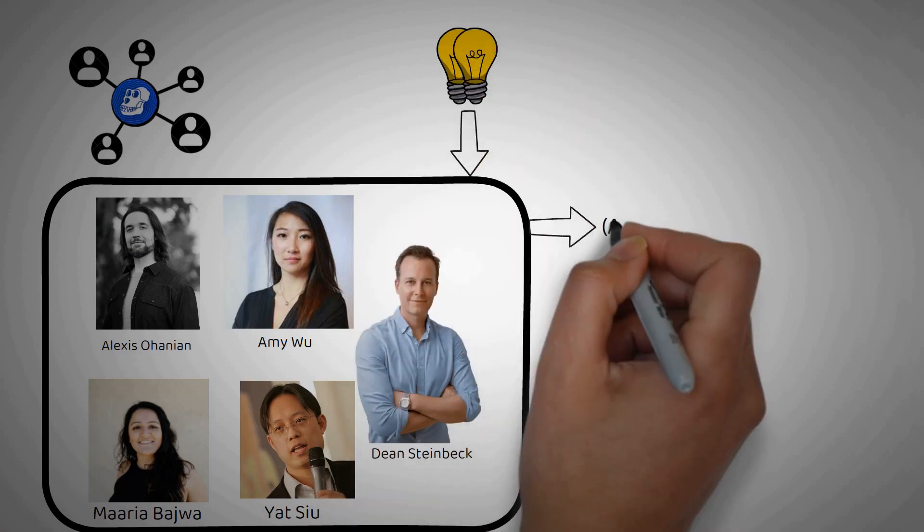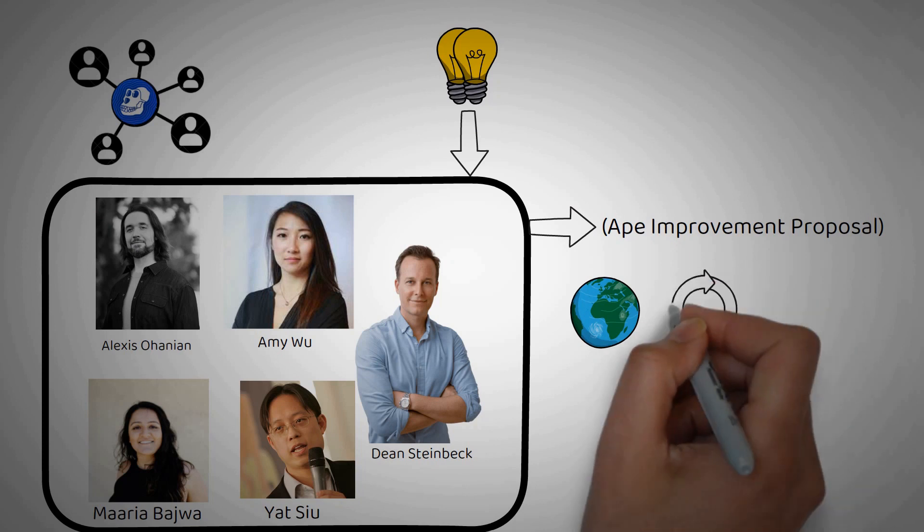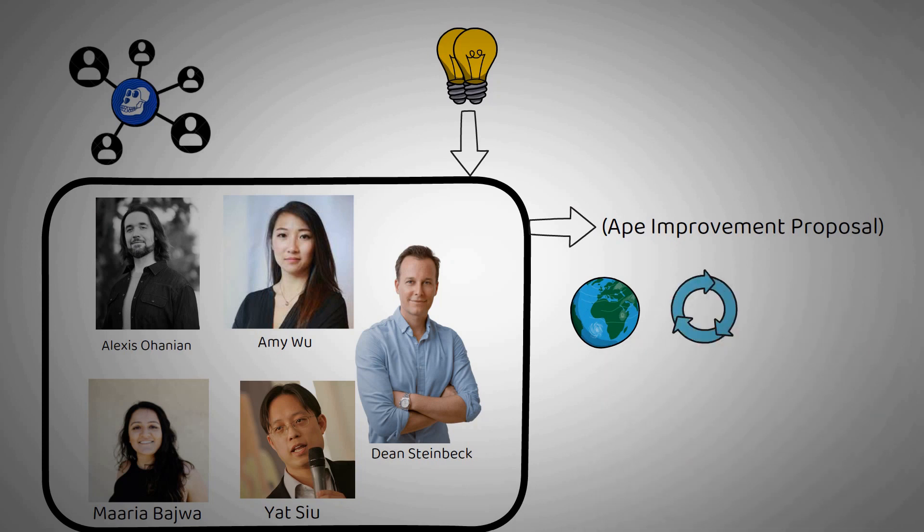Members may submit the AIP, Ape Improvement Proposal. Proposals are categorized as follows. Core: allocations of ecosystem funding, branding decisions. Process: updating or adjusting tools or guidelines. Informational: for general updates.